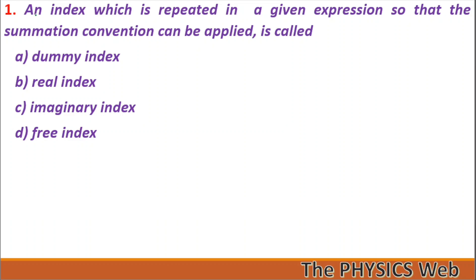Question 1: An index which is repeated in a given expression so that the summation convention can be applied is called a dummy index. So your correct option is option A.